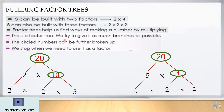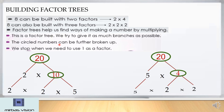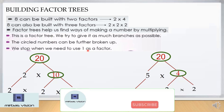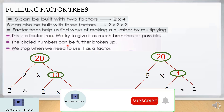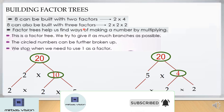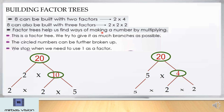So friends, remember these points. This is a factor tree. We try to give it as many branches as possible. The circled number can be further broken up. We stop when we need to use 1 as a factor. And factor trees help us find ways of making a number by multiplying. Remember this.